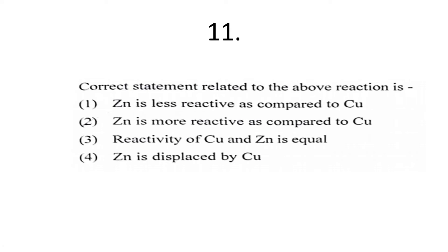The eleventh question: the correct statement related to the reaction between zinc and copper. 'Zinc is less reactive than copper' is false. The correct statement is: zinc is more reactive than copper. 'Reactivity of copper and zinc is equal' is false. 'Zinc is displaced by copper' is false — zinc displaces copper. So option two is correct.